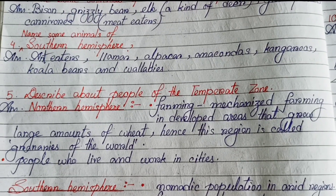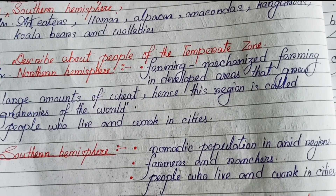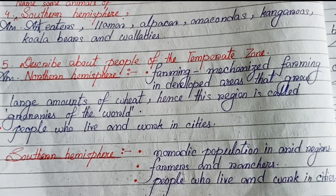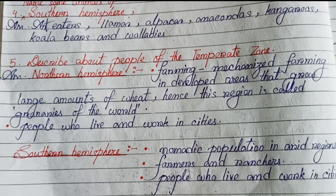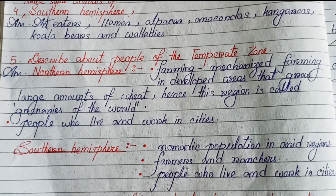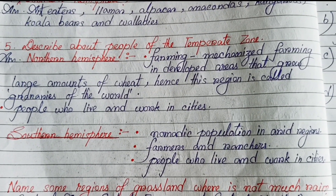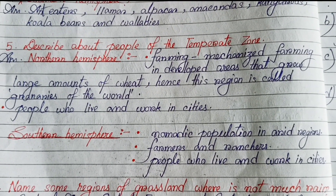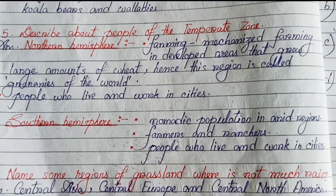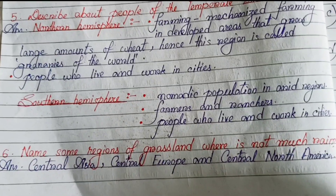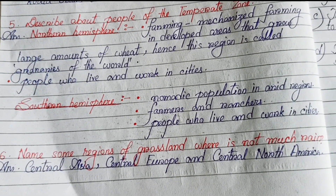Number five: describe the people of the temperate zone. In the northern hemisphere: mechanized farming in developed areas that grow large amounts of wheat, hence this region is called the granaries of the world; also people who live and work in cities. In the southern hemisphere: nomadic population in arid regions, farmers and ranchers, and people who live and work in cities.